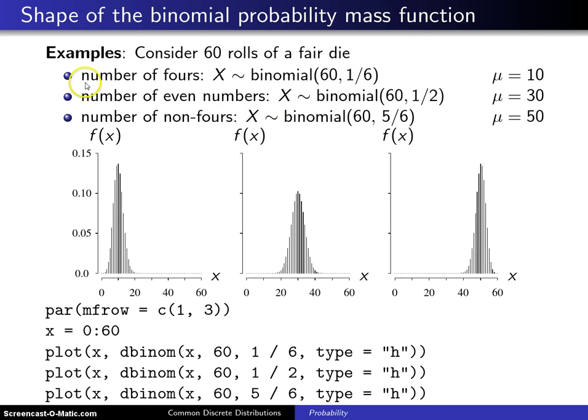In the first case we let X be the number of 4s that occur. That will have the binomial distribution with n=60 because there are 60 Bernoulli trials, and the probability of success is 1/6 on each trial because the probability of rolling a 4 is 1/6 with a fair die.